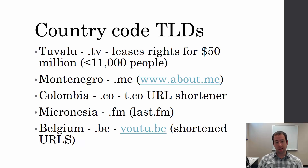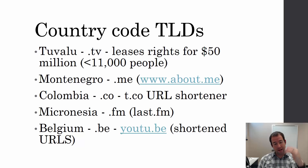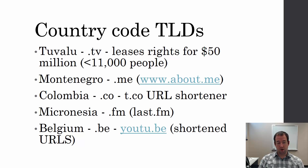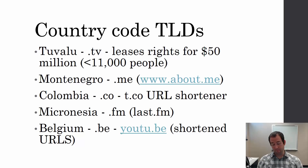.fm is Micronesia's country code — last.fm and other radio and music sites use that. And then Belgium got .be, so YouTube uses .be for shortening their URLs. If you shorten a YouTube link, it's youtu.be.